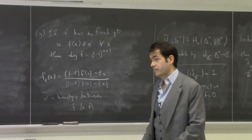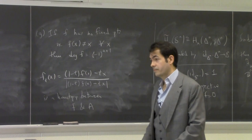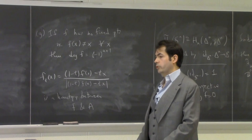We get as a consequence that any map on an even-dimensional sphere homotopic to the identity must have a fixed point.